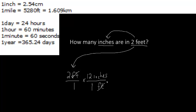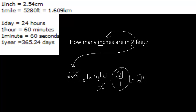So we can go ahead and stop canceling things and solve this out. If we multiply everything along the top we have 2 times 12, that's 24. Then multiply everything along the bottom: 1 times 1 equals 1. Then we do 24 divided by 1, which equals 24. The question is — 24 of what? Our unit at the end is inches. So there are 24 inches in 2 feet.